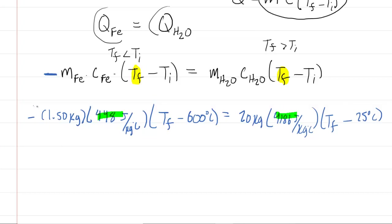So we're going to multiply negative 1.5 times 448. And when you do that, you're going to get negative 672. This is multiplied by the final temperature minus the 600. And for clarity, we'll drop units temporarily. Then you're going to multiply the 20 by the 4186. And you'll get 83,720.